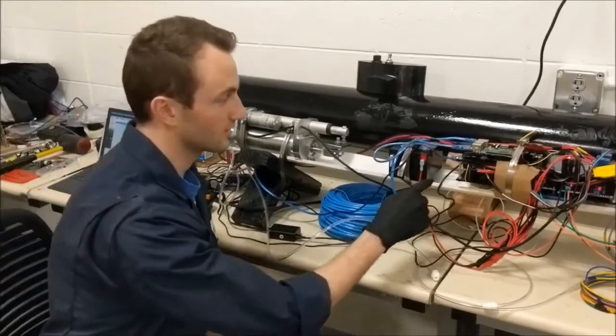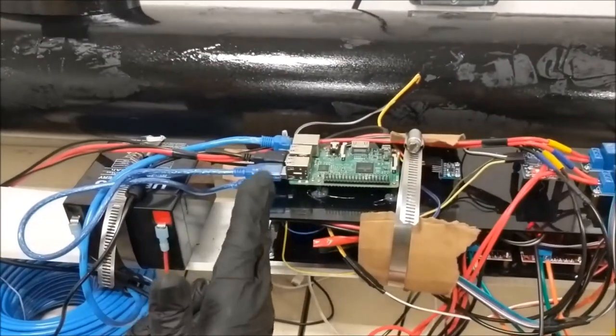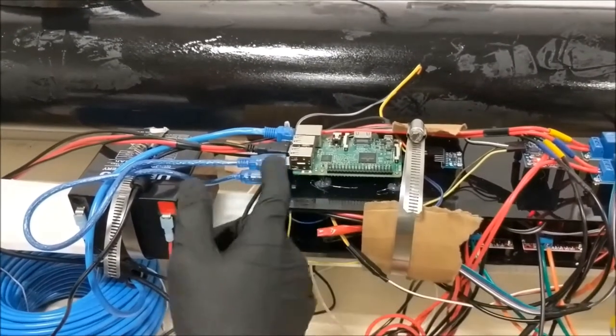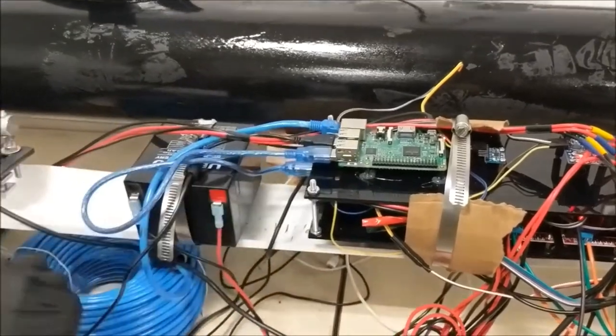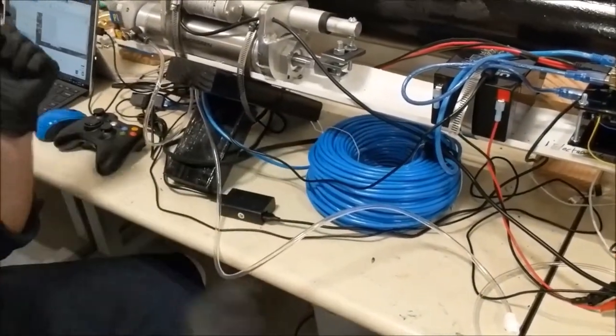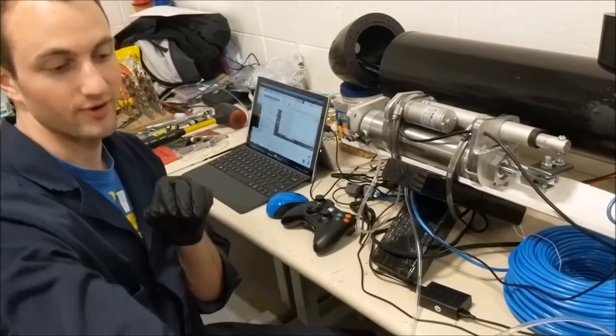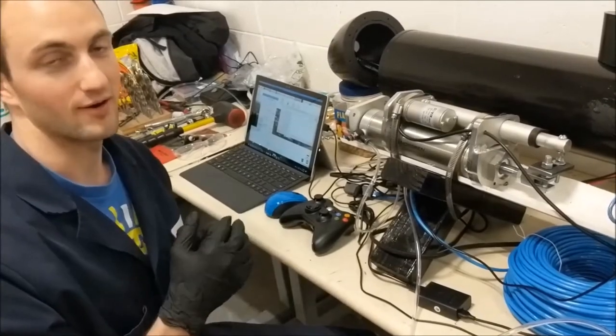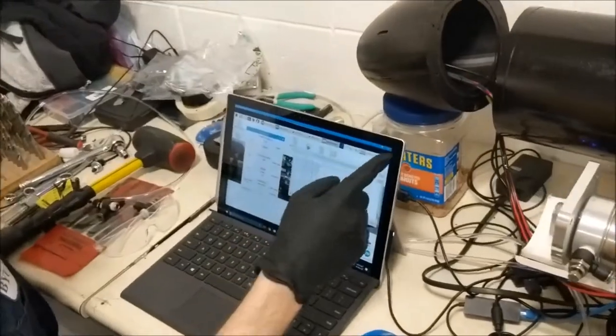So the Arduino Mega is controlling all of the hardware which sends its readings and sensor values back to the Raspberry Pi, which is connected through this ethernet cable which is 200 feet long so that we have enough tether to be able to dive deep or far away from where we are on land. And that is connected back to my computer through VNC.